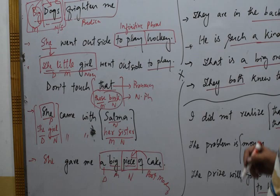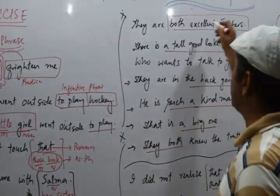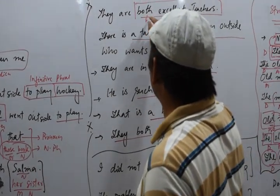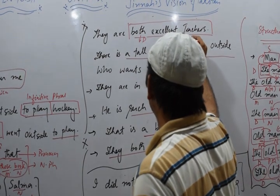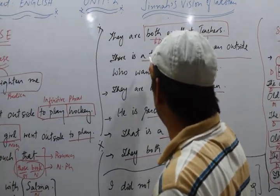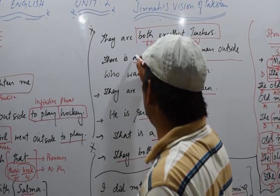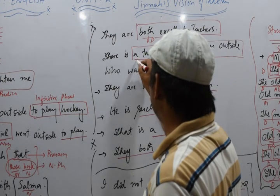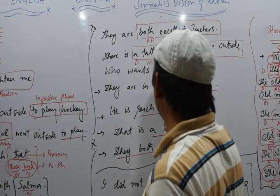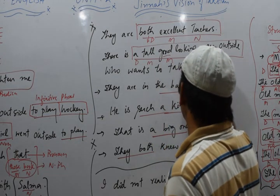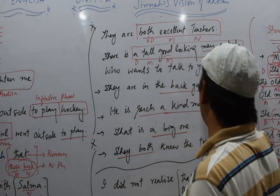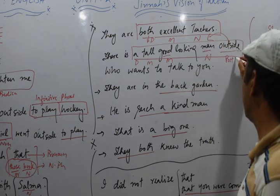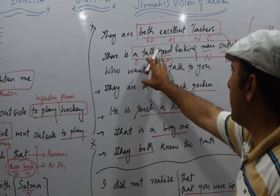We have another noun phrase where 'our' is a determiner or modifier and 'teacher' is the noun — combined, this is a noun phrase. Then we have another example: 'a tall good-looking man outside' — 'a' is determiner, 'tall' and 'good-looking' are modifiers, 'man' is the keyword noun, and 'outside' is post-modifier.